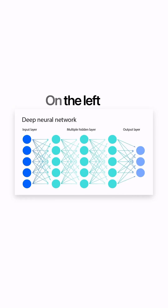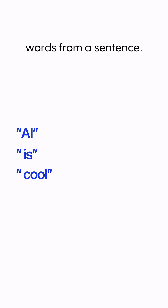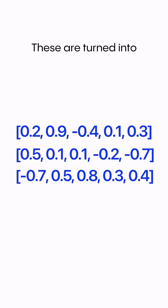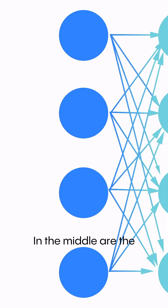On the left is the input layer, where data enters — like pixels from an image or words from a sentence. These are turned into numbers the network can process.